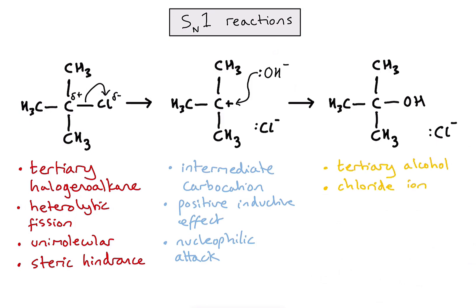The final thing to know is the choice of solvent to encourage an SN1 reaction. For SN1 mechanisms, polar protic solvents are best. Polar means the solvent molecules must be polar or have a permanent dipole, and protic means they can form hydrogen bonds — indicating they are very polar. Examples include water, ammonia, and methanol. These solvents are good at stabilizing or solvating ions, meaning the polar protic solvent molecules surround ions with their partially charged side.